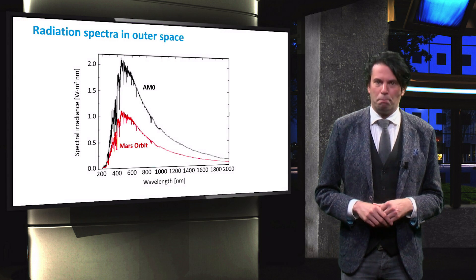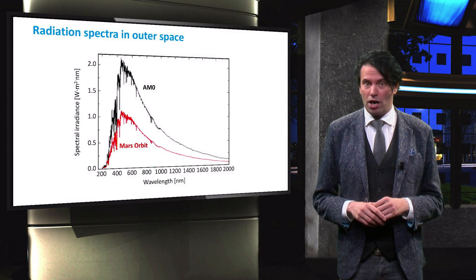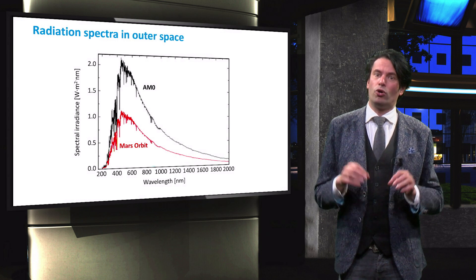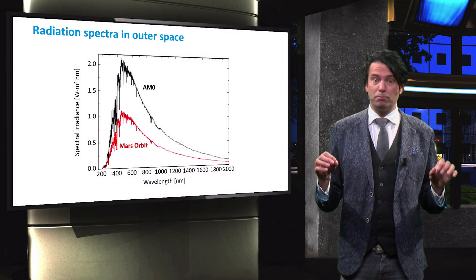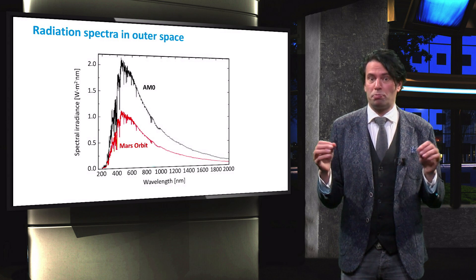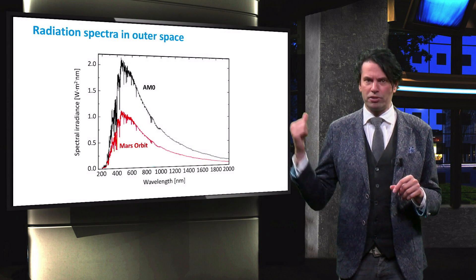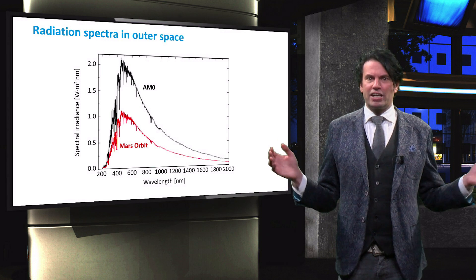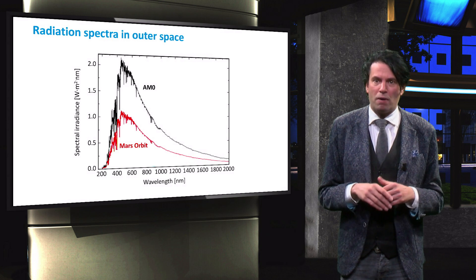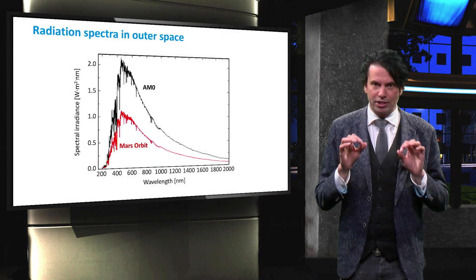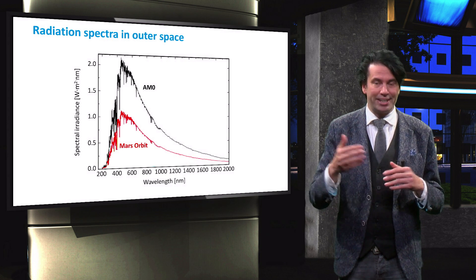For space missions towards Mars, for example, the PV system must be designed in order to cope with lower intensity conditions. The AM0 spectrum and the solar spectrum outside Mars is plotted in this graph. We can see that the maximum power has slightly shifted towards the red part of the spectrum, due to the interaction with matter in space.